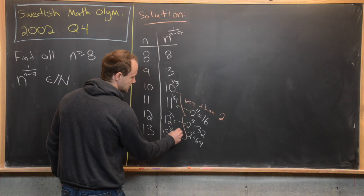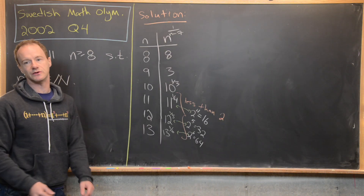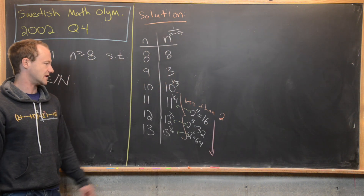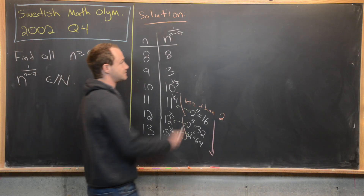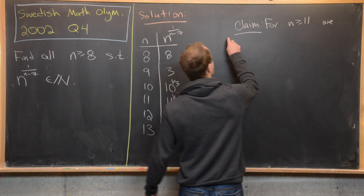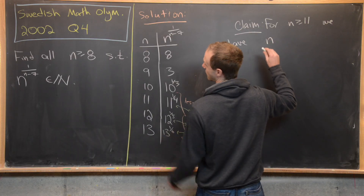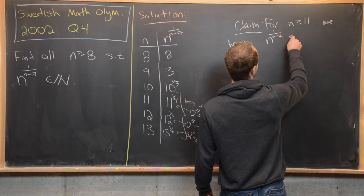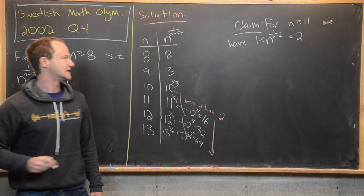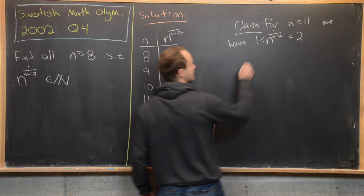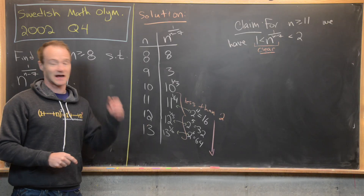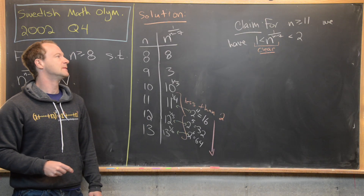This observation leads us to a key claim: for n ≥ 11, n to the 1 over (n minus 7) is less than 2. It's also clearly bigger than 1, so it's strictly between 1 and 2. Since it's strictly between 1 and 2, it cannot be a natural number. So we just need to prove this claim.